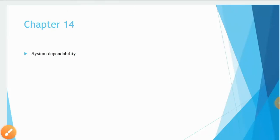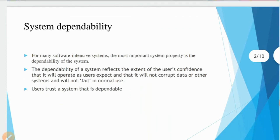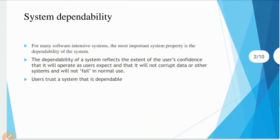Hello everyone. This is the last chapter, chapter number 14 of unit number 6, and the last chapter of your syllabus — System Dependability. For many software intensive systems, the most important system property is the dependability of the system, that is, what your system is dependable on.